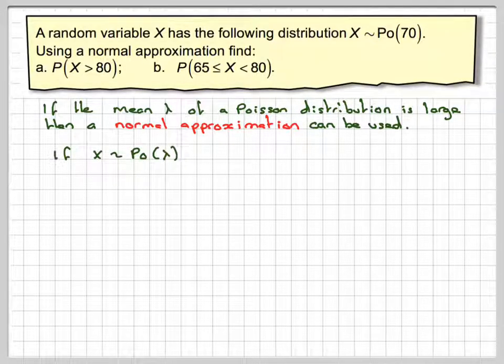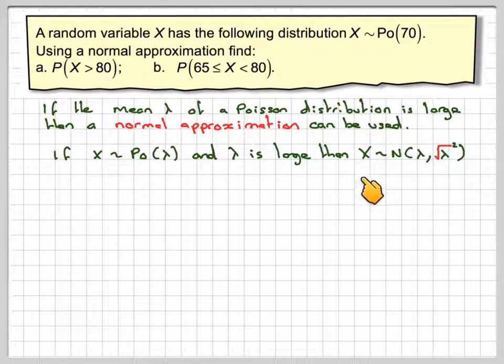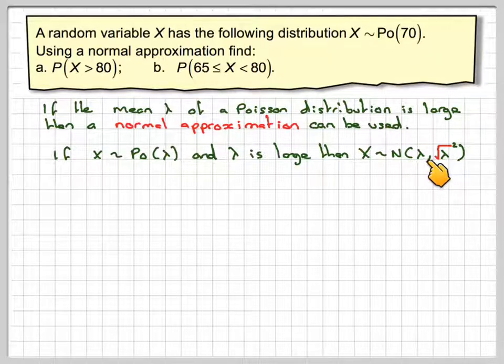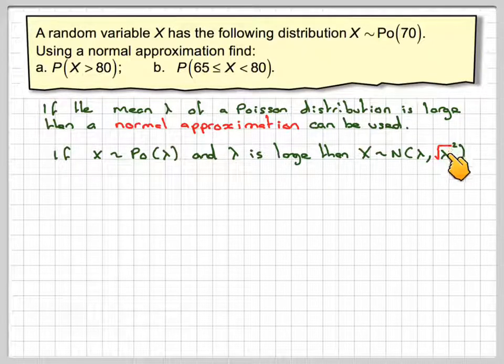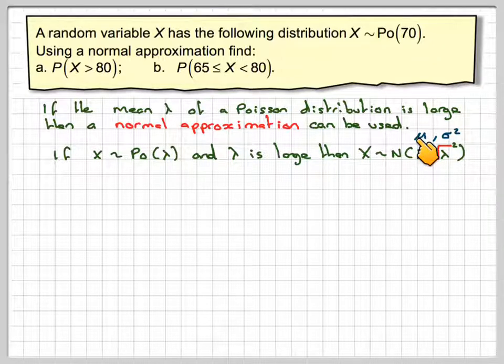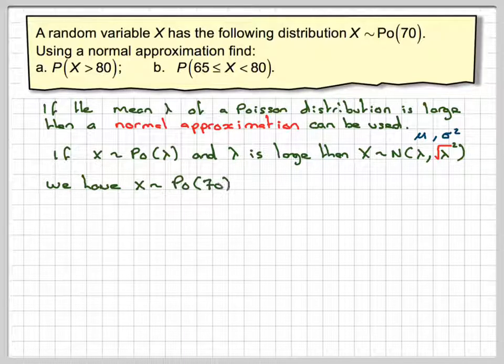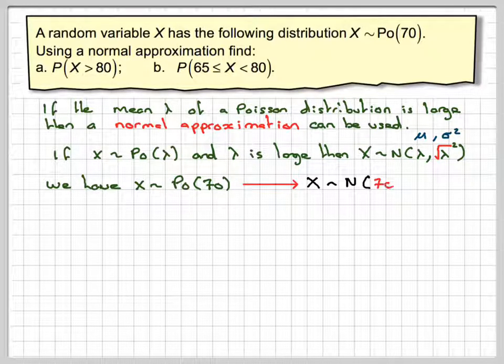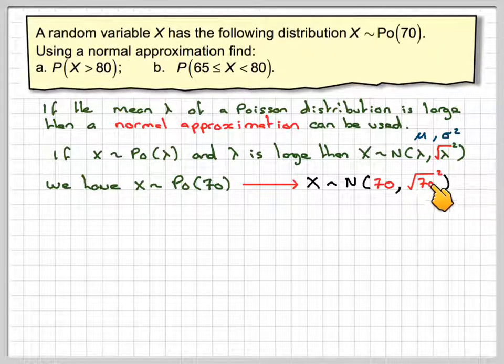If X is Poisson lambda, and lambda is large, then X can be normally distributed with a mean of lambda and a variance of square root of lambda squared. It seems silly to take square root and square it, but when we standardize for the normal curve, we need to use the square root of lambda. Don't forget the two parameters of the normal distribution are the mean and the variance. So we have X Poisson 70, so our normal distribution will be mean of 70 and variance of square root of 70 squared.